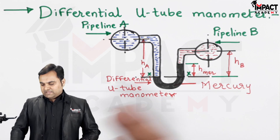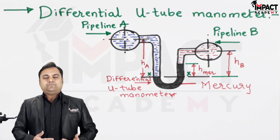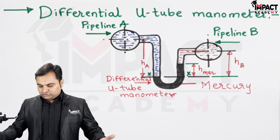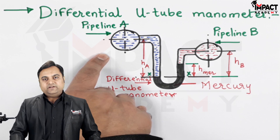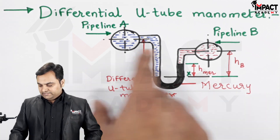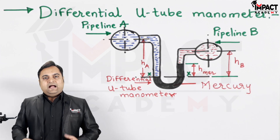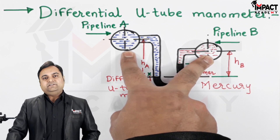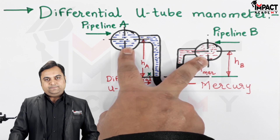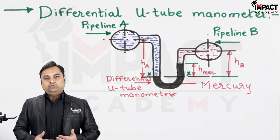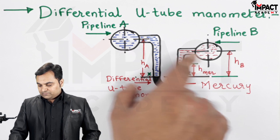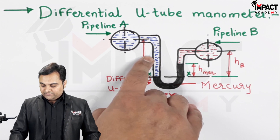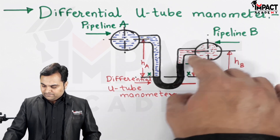It can be at the same level as well, or pipeline B can be above as well. It is not compulsory that only the left pipe should be above — it can be any configuration. At the same time, we can have two similar liquids at different pressures inside both pipelines, or we can have two different liquids inside the pipelines.